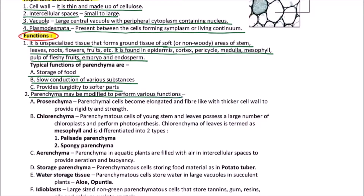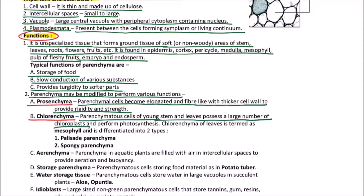Parenchyma may be modified to perform various functions. Prosenchyma: when parenchyma cells become elongated and fiber-like with thicker cell walls to provide rigidity and strength, it is termed prosenchyma. Next is chlorenchyma: parenchyma cells of young stem and leaves possess a large number of chloroplasts and perform photosynthesis. Such parenchyma is called chlorenchyma, and the chlorenchyma of leaves is termed mesophyll, which is differentiated into two types: palisade parenchyma and spongy parenchyma.